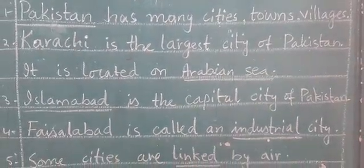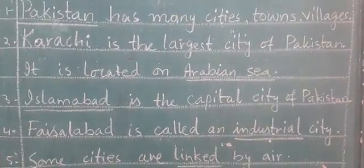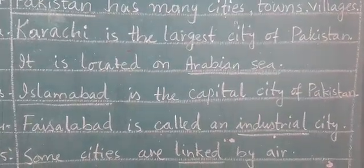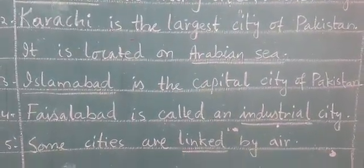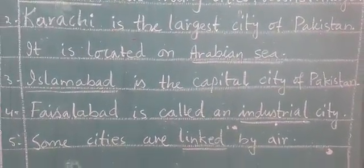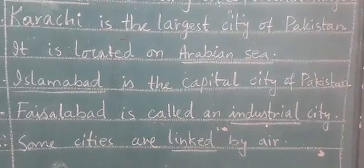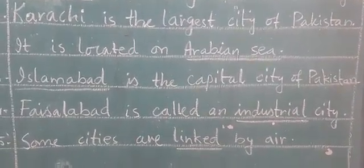Number 3: Islamabad is the capital city of Pakistan. Islamabad is a blank. Number 4: Faisalabad is called an industrial city. Industrial is a blank.